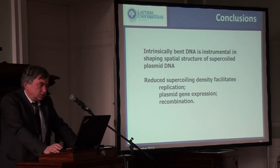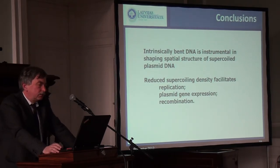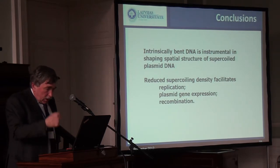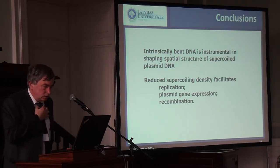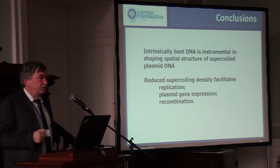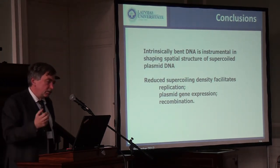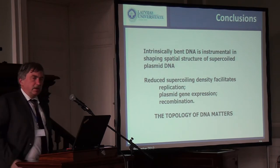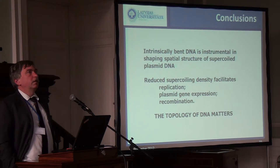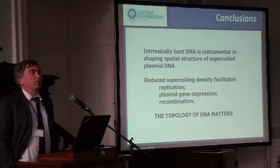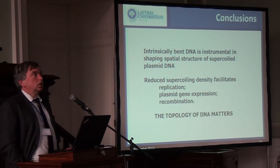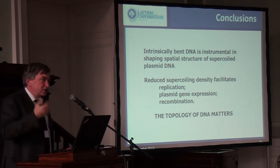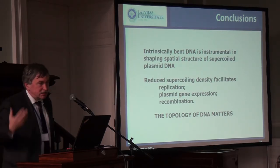In conclusion, intrinsically bent DNA is important in shaping the structure of supercoiled DNA molecules, and reduced supercoiling density of plasmids facilitates the main processes in which those plasmids work — replication, plasmid gene expression, and recombination. The topology of DNA has to be considered in all the processes which we are trying to implement to achieve our practical and applied goals, because even in systems biology this is an additional aspect which has to be addressed if we want to see the system working as a whole.